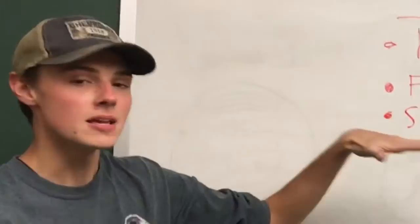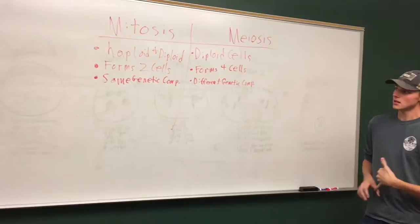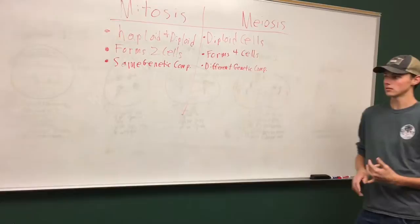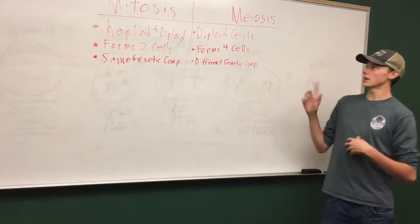The difference between mitosis and meiosis is the spelling of the two words, and then there's also other differences. Mitosis takes place in both haploid and diploid cells, while meiosis takes place only in diploid cells. Mitosis, the full process, at the end it only forms two cells overall. With meiosis, because there's meiosis I and II, forms four cells. And then the last difference is they have the same genetic composition in mitosis, but meiosis, since it forms gametes, it's going to be different genetic composition for each daughter cell.